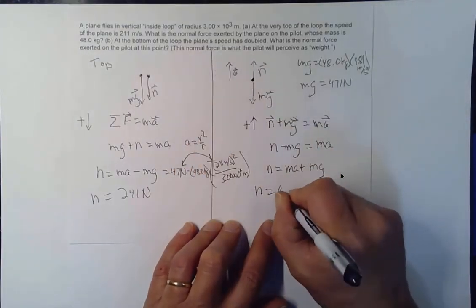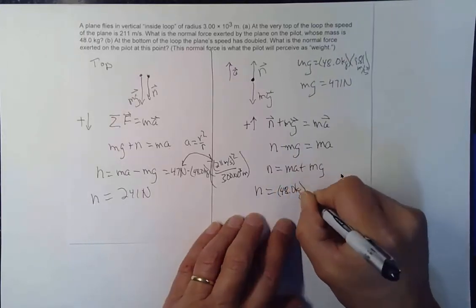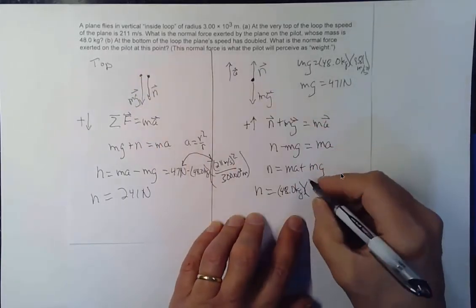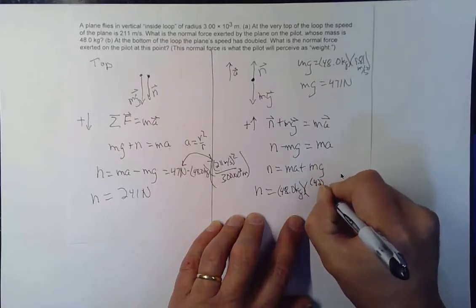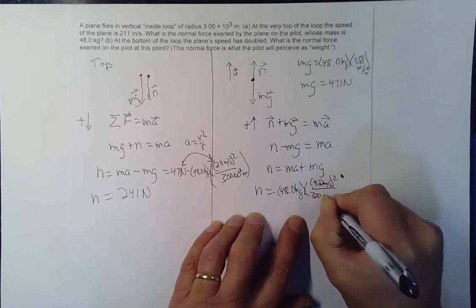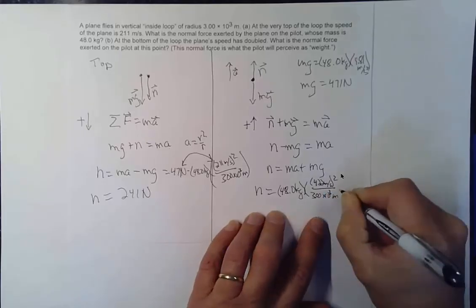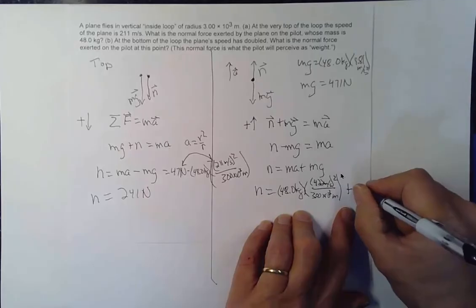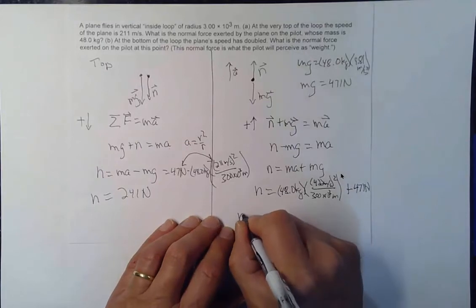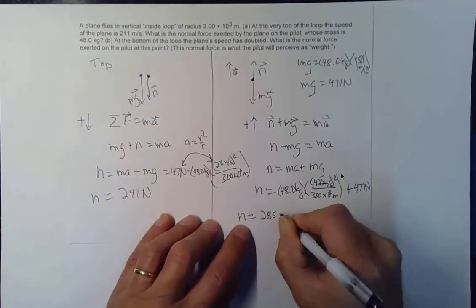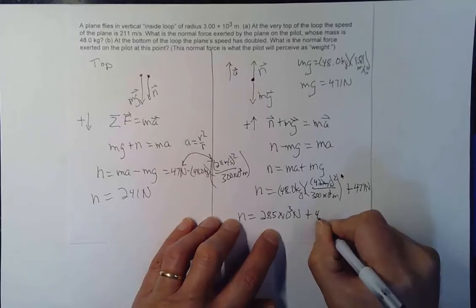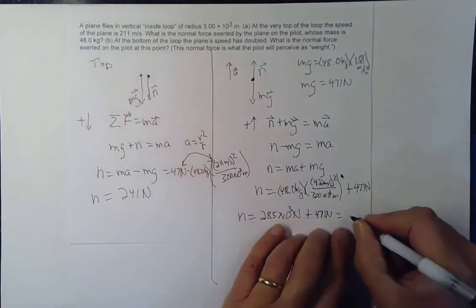So I'll have 48.0 kilograms times V squared. That'll be 422 meters per second squared divided by the 3.00 times 10 to the third meters. Plus the weight of the pilot which is 471 newtons. And the normal force ends up being 2.85 times 10 to the third newtons. Plus the 471 newtons. 3.32 times 10 to the third newtons.